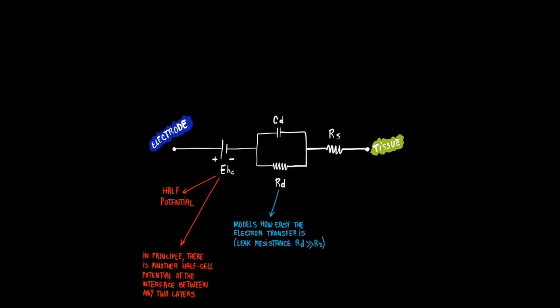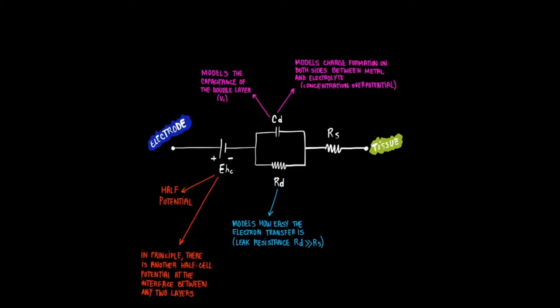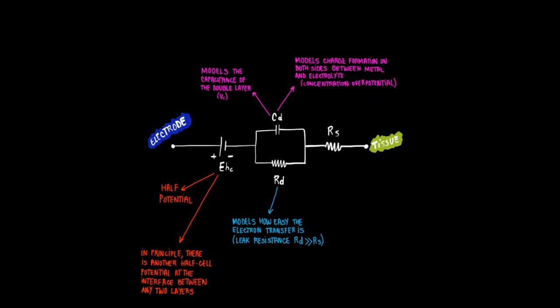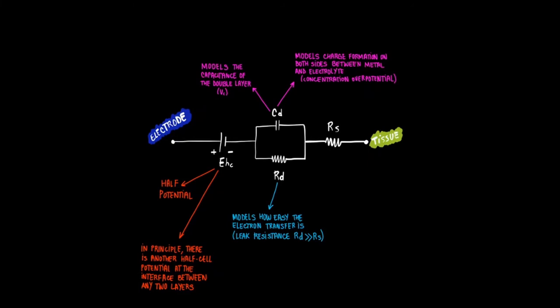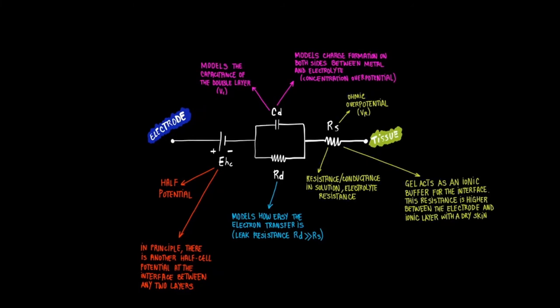The capacitor you see at the top models the capacitance of the double layer or the charge formation on both sides of the metal and electrolyte solution. This capacitance is represented by the concentration over potential. The final resistance RS to the right models the resistance or conductance in the electrolyte solution represented by the ohmic over potential.